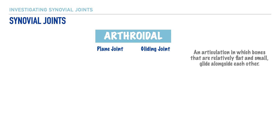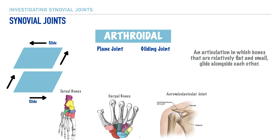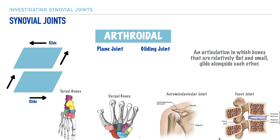Notice the image on the left-hand side of the screen — these two structures represent the bones of an arthroidal joint. The arrows showcase these components sliding in multiple directions on top of or alongside the other. Examples include the tarsal bones, the carpal bones, the acromioclavicular joint, and the facet joints of the vertebral column. Arthroidal joints are classified as multi-axial, meaning they can move in all three planes of motion — frontal, sagittal, and transverse — however, these gliding movements are severely restricted because of the ligamentous structures that connect the bones.